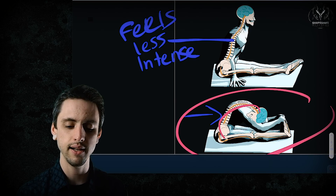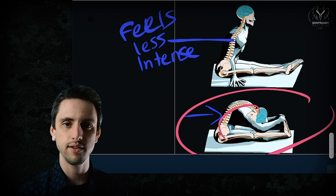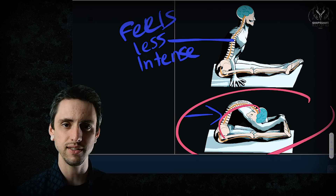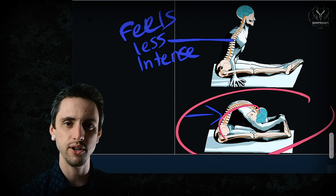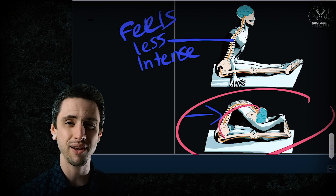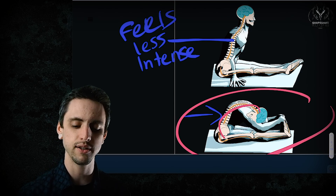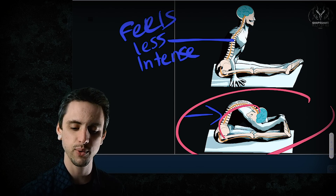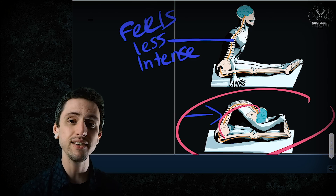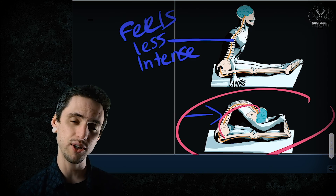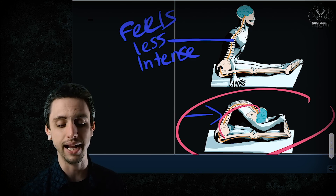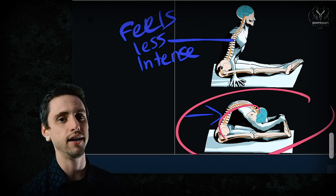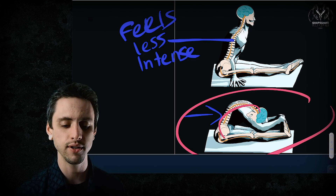Why do people do the rounded pose? It feels more intense, and this top pose feels easier. People don't like easy — they want to be good at yoga and think flexibility means you're good at it. It feels less intense because you're not stretching and pulling on your spinal cord, brain, and sciatic nerves.